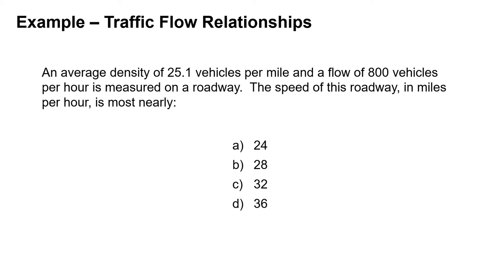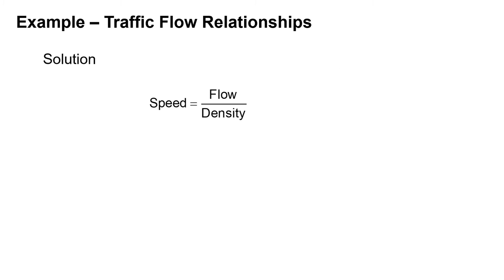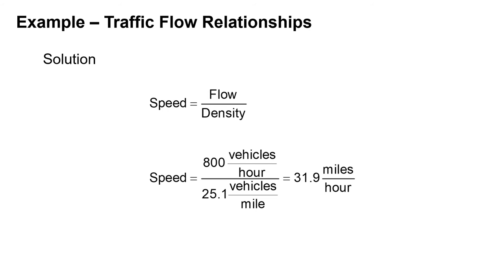Example: We're told that we have an average density of 25.1 vehicles per mile and a flow of 800 vehicles per hour was measured. We're asked to find the speed in miles per hour. Recall that speed equals flow divided by density, so the speed equals 800 vehicles per hour divided by 25.1 vehicles per mile, giving us a speed of 31.9 miles per hour. That is answer C.